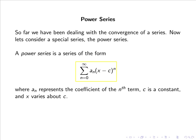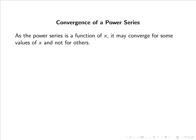Where a_n represents the coefficient of the nth term, c is a constant, and x varies about c. Note, unlike the other series seen so far, the power series is a function of x. Hence, as the power series is a function of x, it may converge for some values of x and not for others.